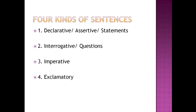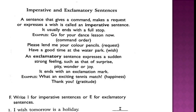So far, we have seen what is an assertive or declarative statement, a question or interrogative sentence, imperative and exclamatory sentences. But there are some important points which you should learn about imperative and exclamatory sentences. A sentence that gives a command, makes a request or expresses a wish is called an imperative sentence. It usually ends with a full stop. For example, 'Go for your dance lesson now' — it's a command or an order. 'Please lend me your color pencils' — it's a request. 'Have a good time at the water park' — this sentence expresses a wish. An exclamatory sentence expresses a sudden strong feeling, such as surprise, pity, wonder or joy, and it ends with an exclamation mark.